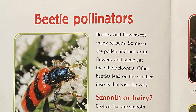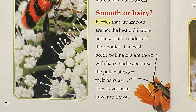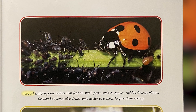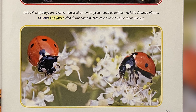Beetle pollinators: Beetles visit flowers for many reasons. Some eat the pollen and nectar in flowers, and some eat the whole flowers. Other beetles feed on the smaller insects that visit flowers. Beetles that are smooth are not the best pollinators because pollen slides off their bodies. The best beetle pollinators are those with hairy bodies, because the pollen sticks to their hairs as they travel from flower to flower. Ladybugs are beetles that feed on small pests such as aphids, which damage plants. Ladybugs also drink some nectar as a snack to give them energy.